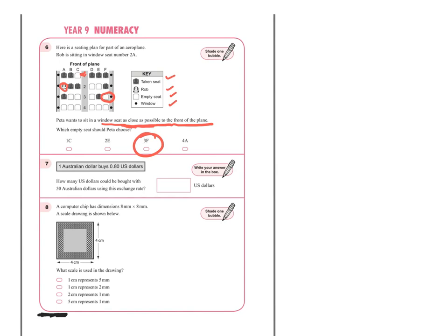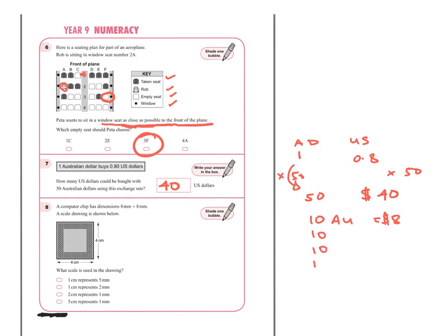Question seven: one Australian dollar buys 0.8 US dollars. How many US dollars can be bought with 50 Australian dollars? Multiply both sides by 50: 50 times 0.8 equals 40. Alternatively, 10 Australian dollars equals 8 US dollars, and five groups of that gives 40. The answer is 40 US dollars.